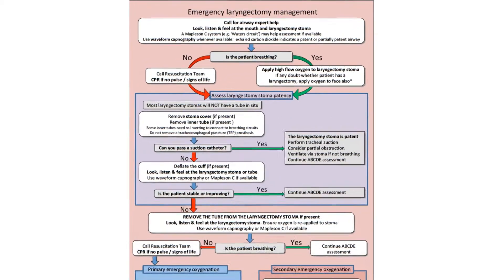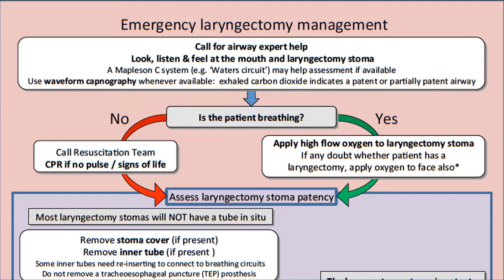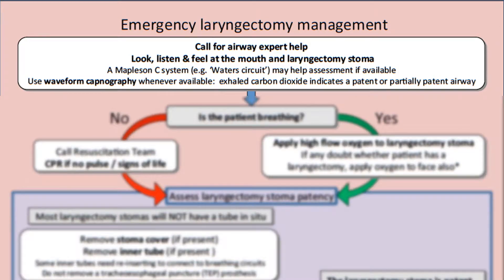At the top, the start of the algorithm, the first step is to call for expert airway help. Next, as in any life support situation, assess the airway and the breathing. Assessment is by looking, listening and feeling for breathing at the patient's mouth and at the laryngectomy stoma for 10 seconds.